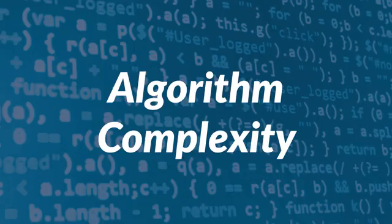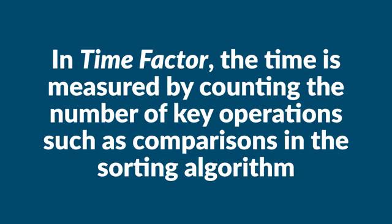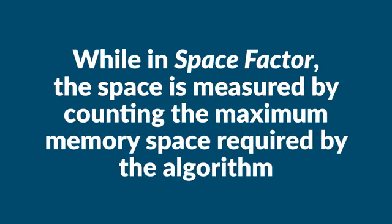We also have algorithm complexity. Suppose x is an algorithm and n is the size of input data. The time and space used by algorithm x are the two main factors which decide the efficiency of x. In the time factor, time is measured by counting the number of key operations such as comparisons in the sorting algorithm. In the space factor, space is measured by counting the maximum memory space required by the algorithm.